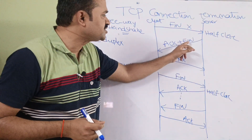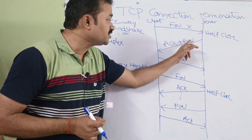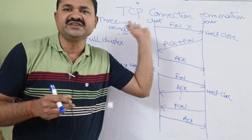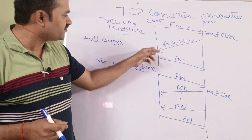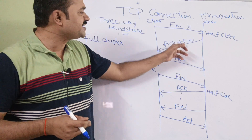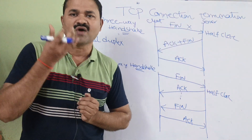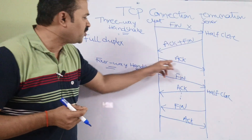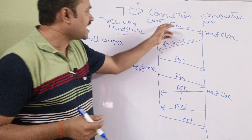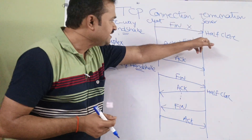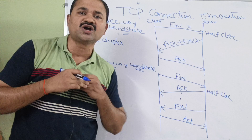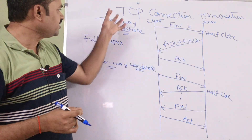Next, assuming the server has no data to send, the server will also send a FIN segment to the client. In addition to the FIN segment, it will provide acknowledgement for the previous FIN segment transmitted by the client. Once the client receives the acknowledgement and FIN segment from the server, it responds with an acknowledgement segment. The connection between client and server is now closed.